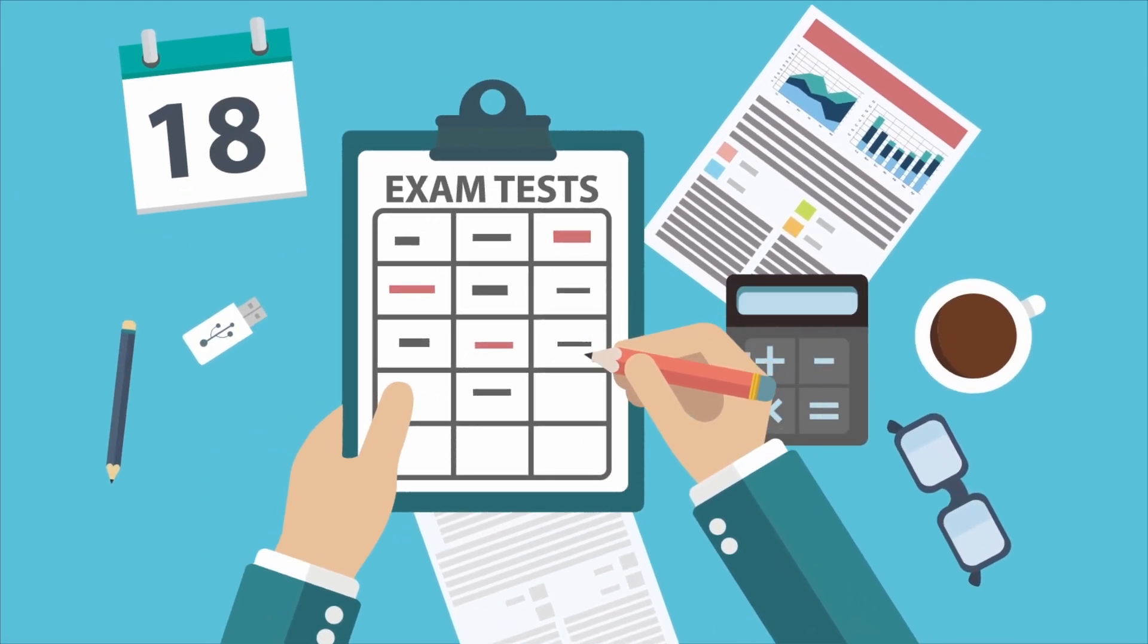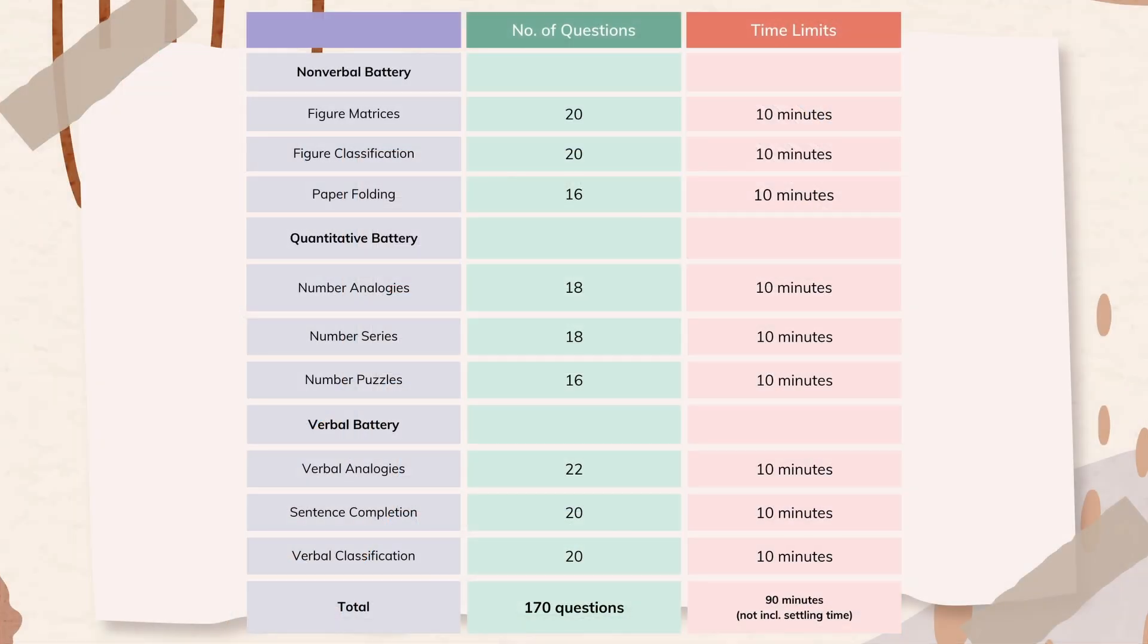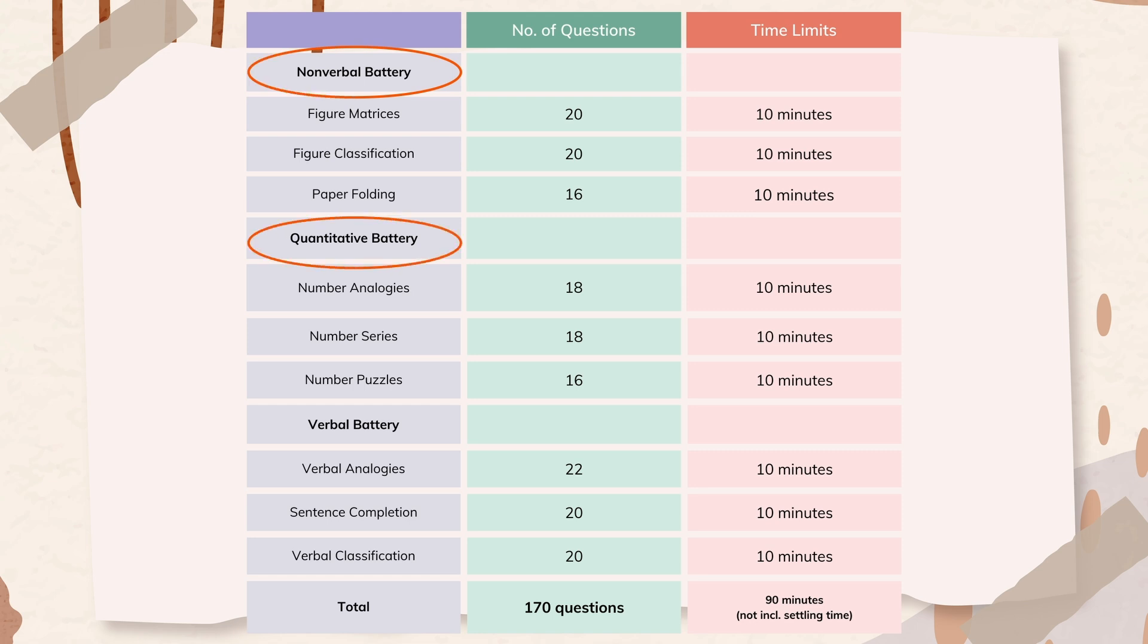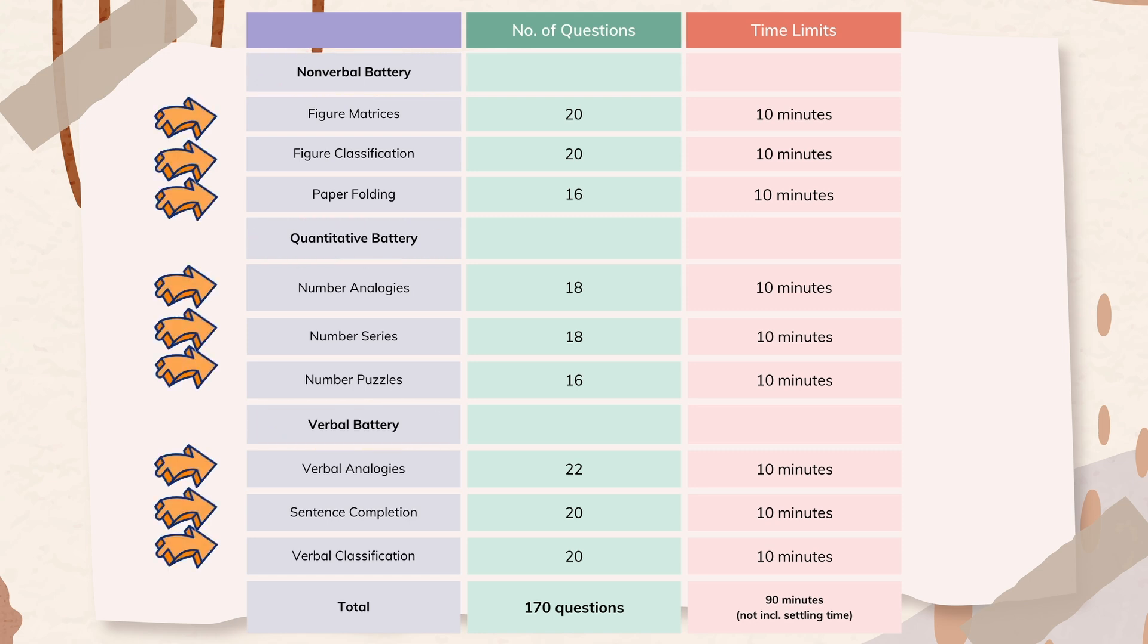Before we jump into the sample questions, let's quickly go over the test structure. The CogAT is divided into three main batteries: nonverbal, quantitative, and verbal. Each battery is further broken down into three subtests.